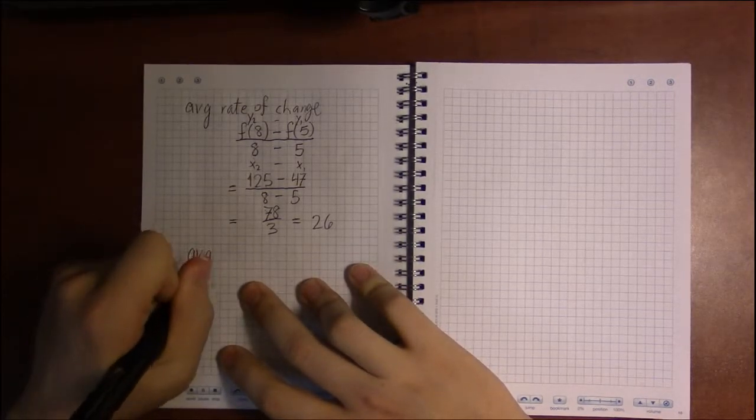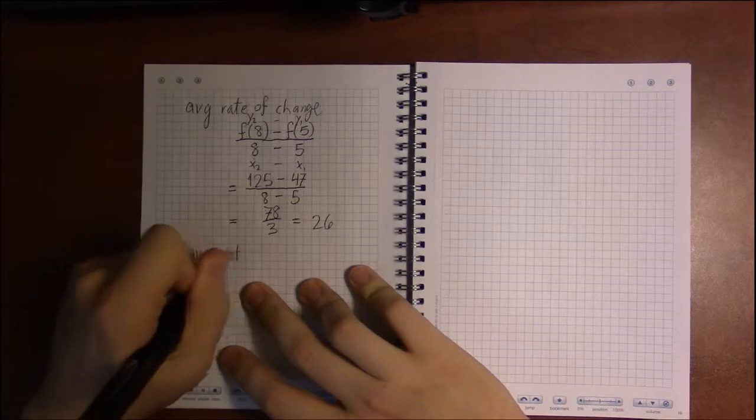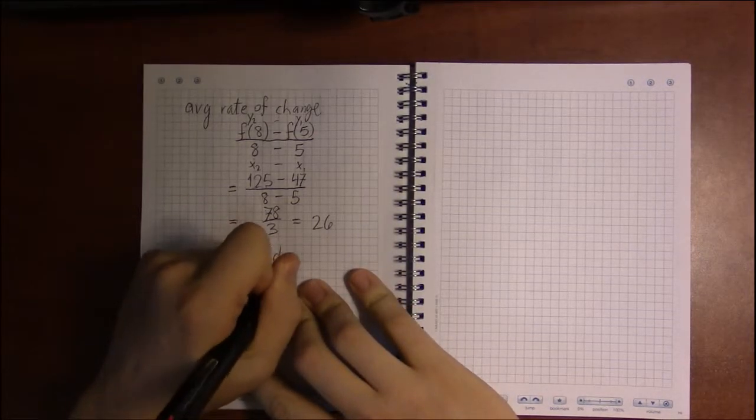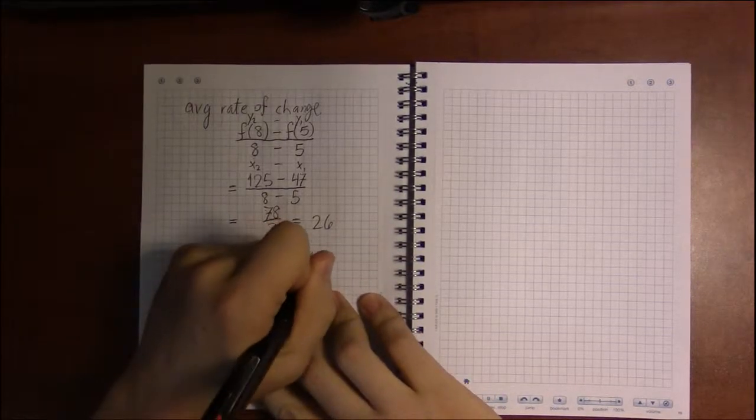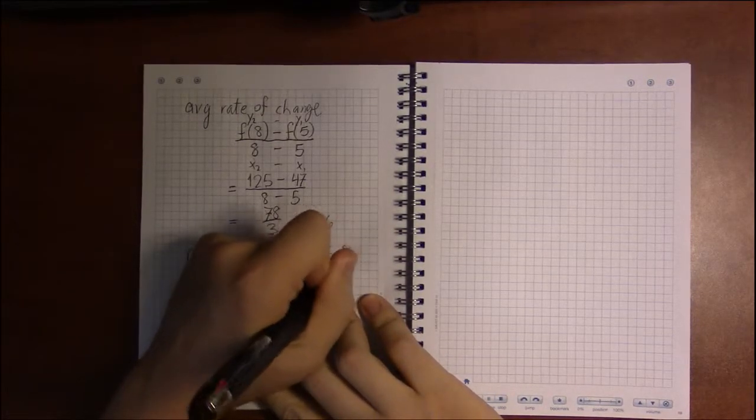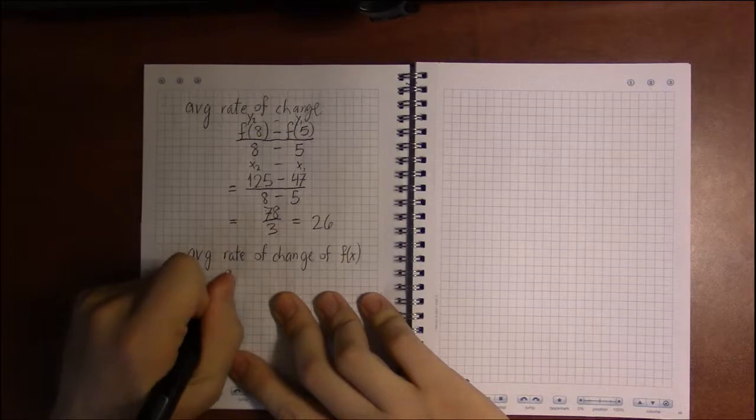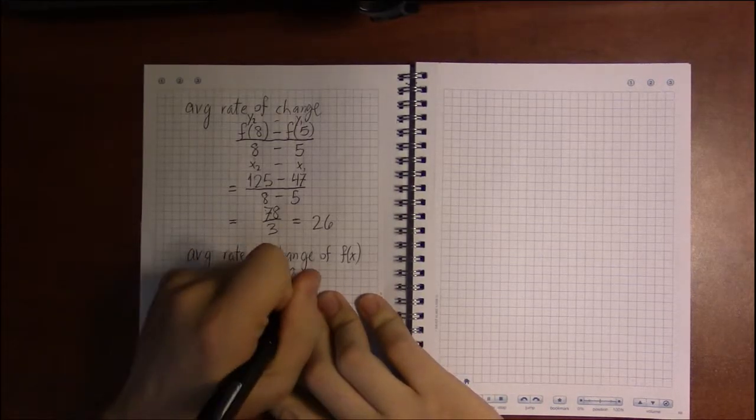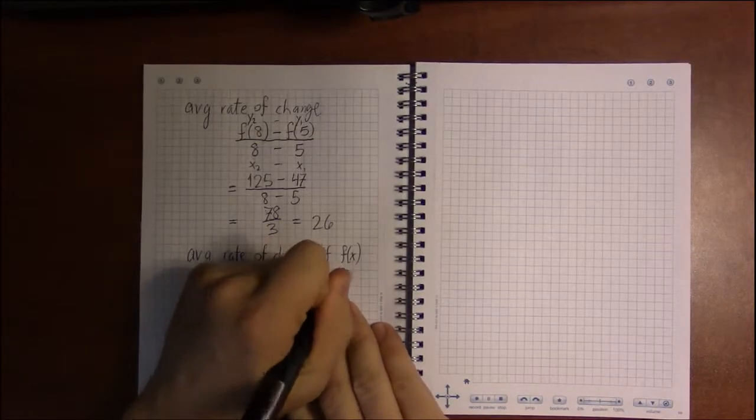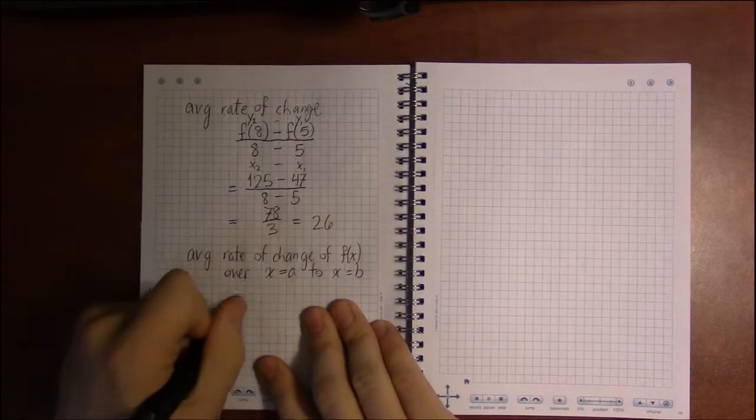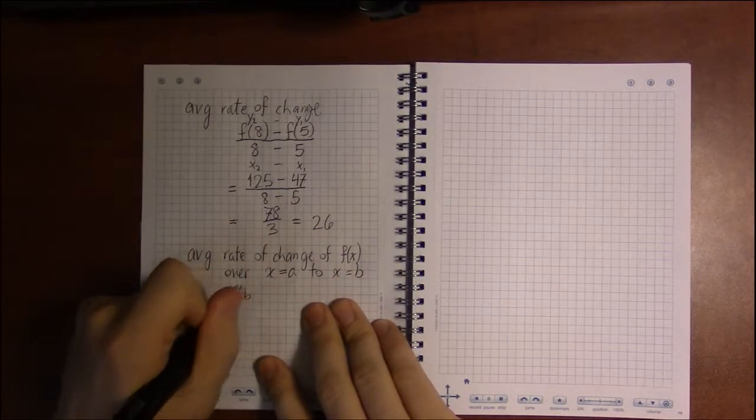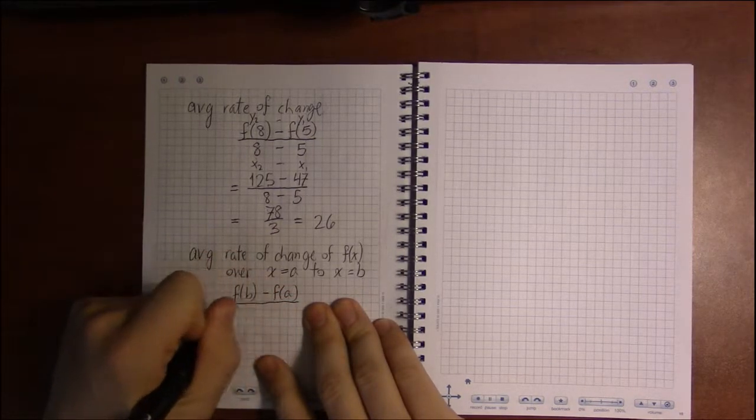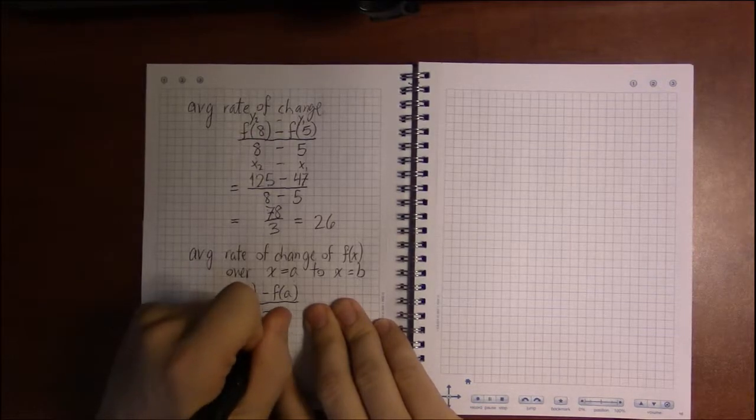So we say that in general, the average rate of change of a function, some f of x, over the interval x equals a to x equals b is simply f of b minus f of a divided by b minus a.